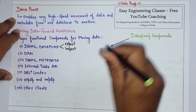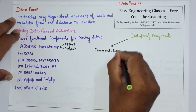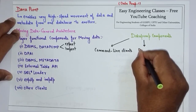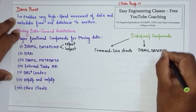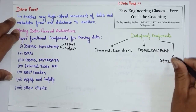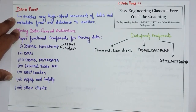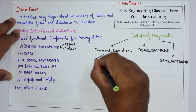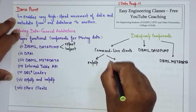The major components of Data Pump are: command line clients, DBMS_DATAPUMP, and DBMS_METADATA. We also have two different utility tools — one is the expdp command and another is the impdp command.